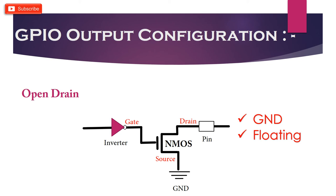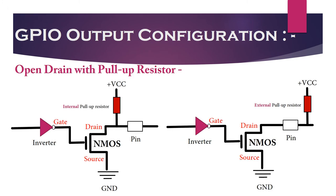Now we understand what open drain configuration is and its various states. To make use of this configuration, we need to provide pull-up capability — which leads us to open drain with pull-up resistor. Here are two pictures of open drain configuration: one with internal pull-up and the other with external pull-up. Internal pull-up can be activated by configuring GPIO control registers.